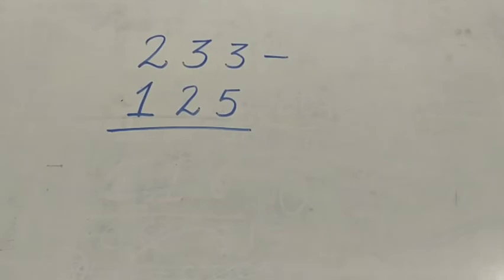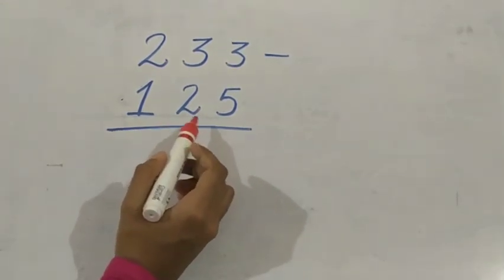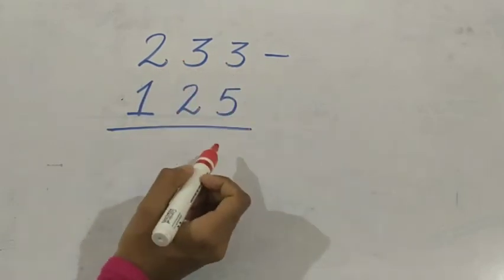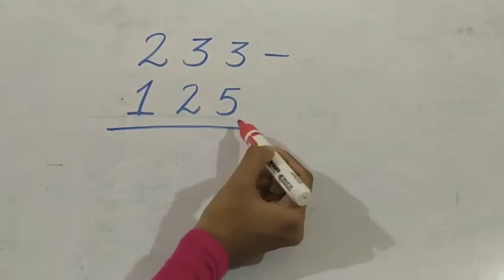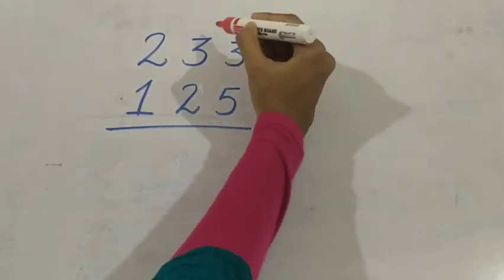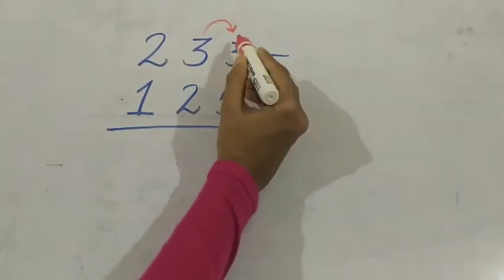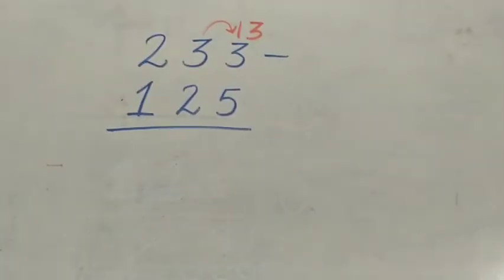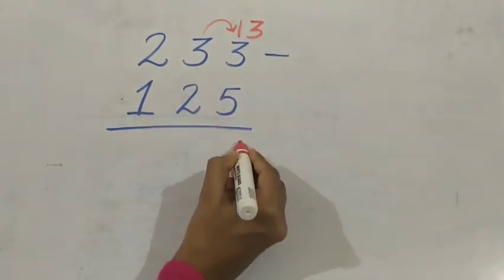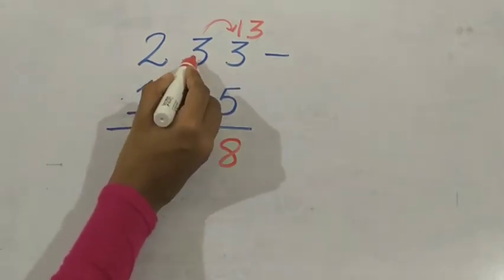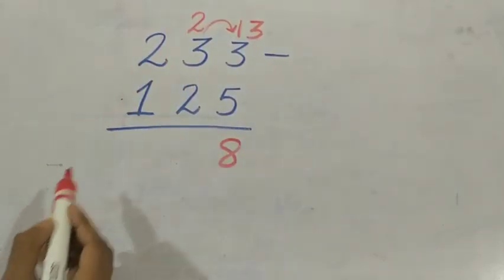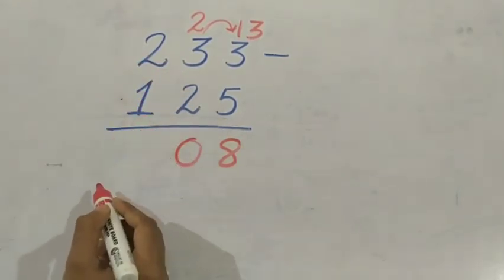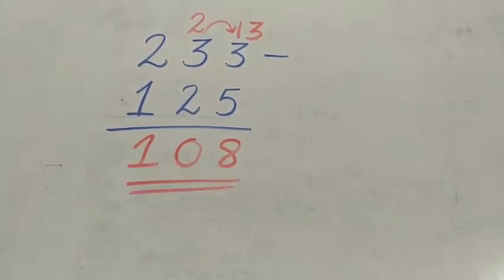Now let us do another problem. The numbers are 233 and 125. I want to subtract 125 from 233. First, 3 minus 5 — is it possible? No. So we will take 1 from the tens place to the ones place. So here 13. 13 minus 5 is 8. We took 1 ten-rupee to this side, so here only 2. 2 minus 2 is 0. And 2 minus 1 is 1. So the answer is 108.